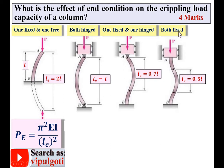Case four: both ends fixed. Here you can see one end of the column is fixed and the second end is also fixed. In each and every case your effective length will change. In case one, the effective length is two times the actual length L of the column.